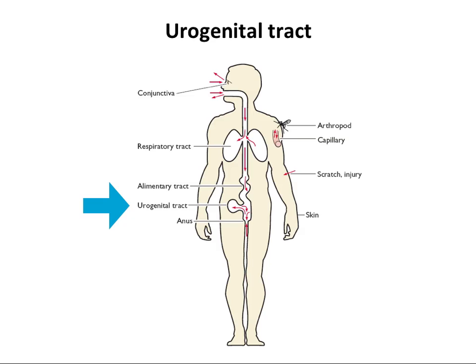The urogenital tract is another portal of entry. It is protected by low pH and mucus, but sexual activity will introduce abrasions that allow viruses to get in. For example, papillomaviruses that cause genital warts are introduced in this way. These kinds of viruses typically stay localized, but other viruses that infect the urogenital tract — like herpes viruses or even HIV — initially replicate there and then move somewhere else.